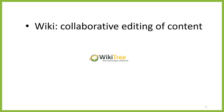As its name implies, WikiTree is a Wiki, which is a website that allows collaborative editing of its content by its users. You're probably most familiar with Wikipedia, where there's only one article on a particular topic, and everyone who has information to contribute on that topic contributes to the same article. Likewise, with a collaborative family tree, each individual ancestor should appear only once, and everyone who has information on that ancestor contributes to that ancestor's profile.